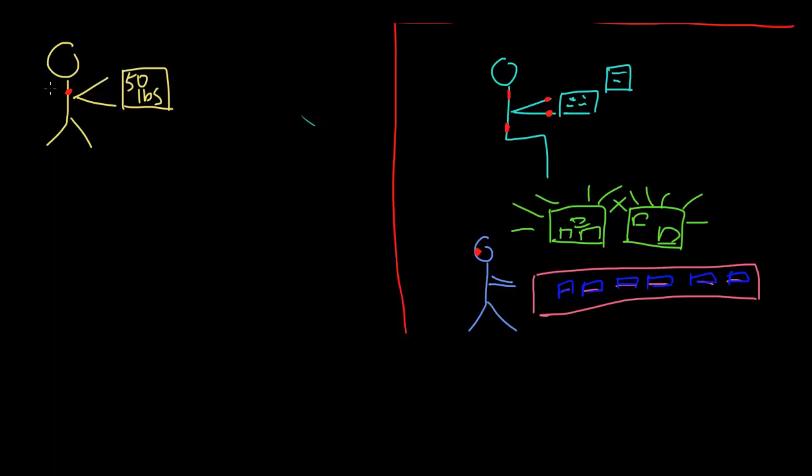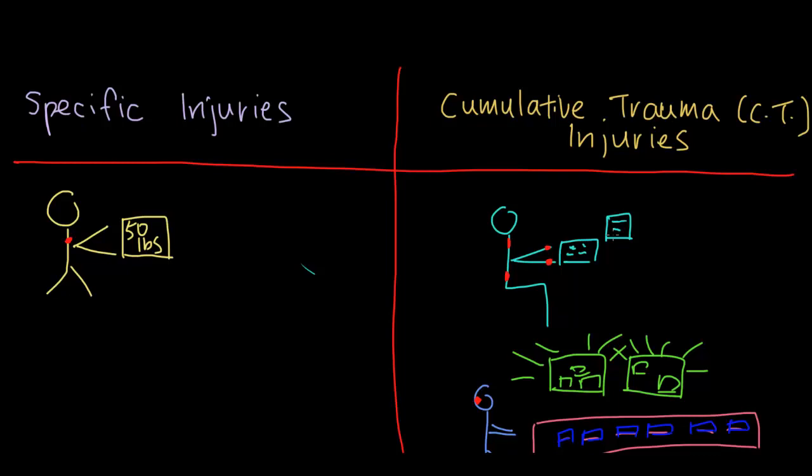Let's go back to this worker. This worker over here, while working on the computer, she may also start to experience vision loss. You're looking at the computer all day. You're straining your eyes. And eventually you start to have a prescription and it only gets worse every year. Your prescription gets worse. Well, that's called vision loss. And that's another cumulative trauma injury.